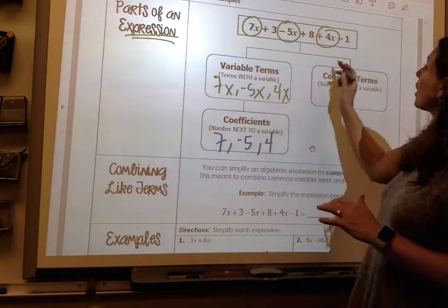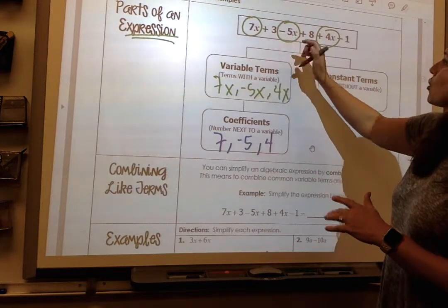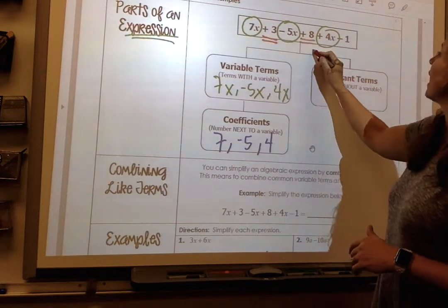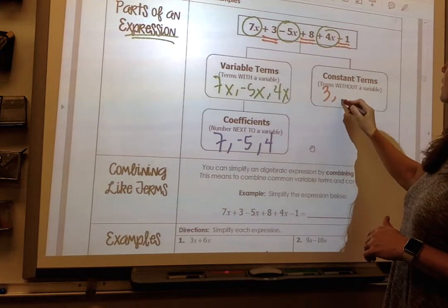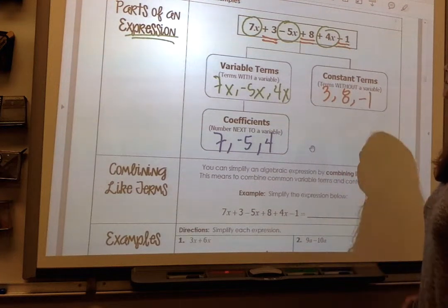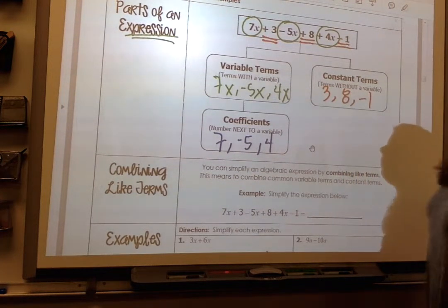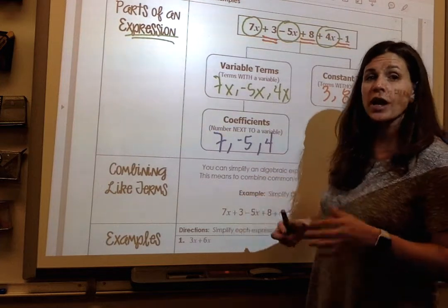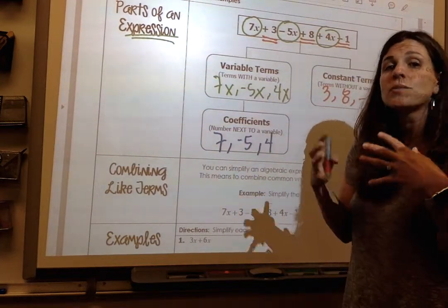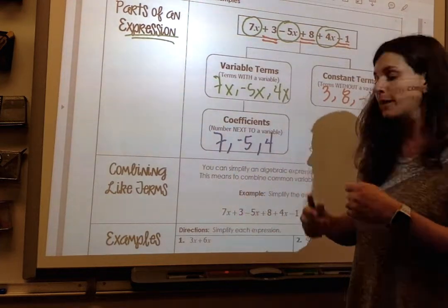If I look over here, I have my constant terms. My constant terms in this expression are 3, 8, and negative 1. So if I ask you to simplify this expression, I'm bringing all my variable terms that are alike, and I'm combining them.